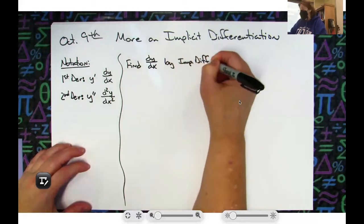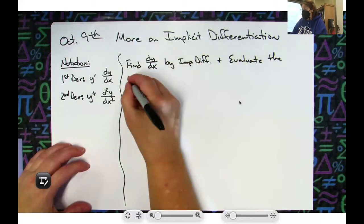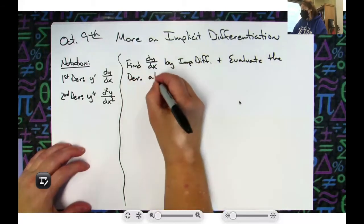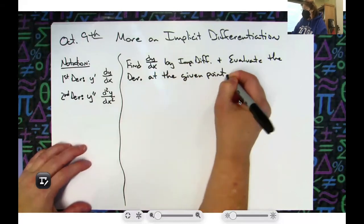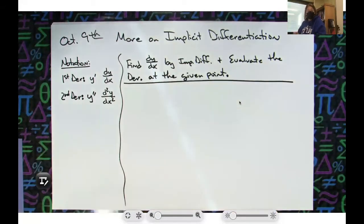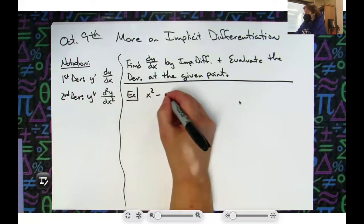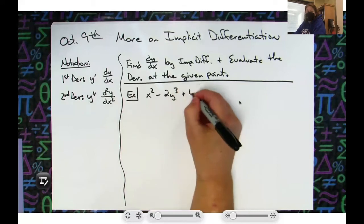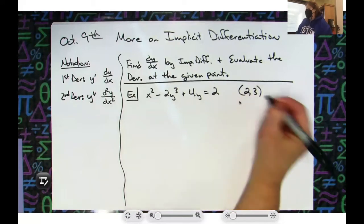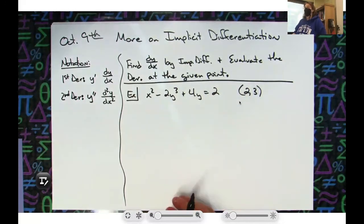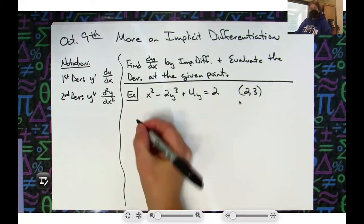...the derivative at the given point. I verbally talked about how you would do this at the end of the lesson yesterday but we didn't actually do it. So they're going to give you maybe say an x squared minus 2y to the third plus 4y equals 2, and they're going to give you a point, say (2,3). So all they're asking you to do - they're setting you up for writing that equation of the tangent line, they're wanting you to calculate a derivative here, evaluate it at this given point.